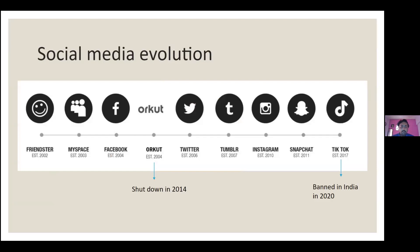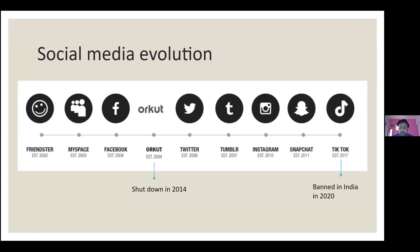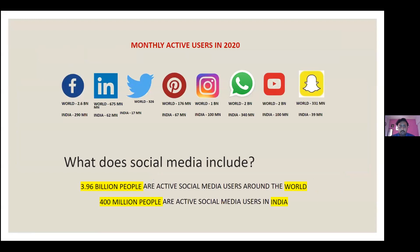A little history on how social media evolved — it started with Orkut, then Yahoo or Gmail, then Facebook, then Twitter, Tumblr, Discord for gamers, and TikTok which recently got banned. Social media is a huge place with 3.96 billion users globally, and in India there are around 400 million users — so you can target a very large audience.